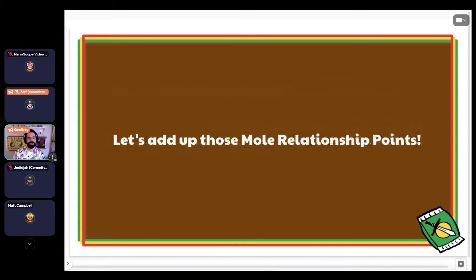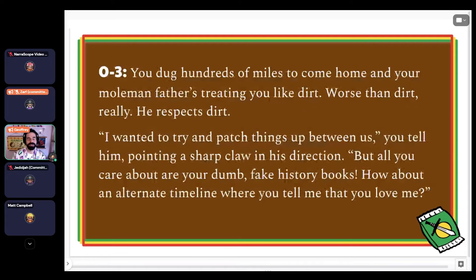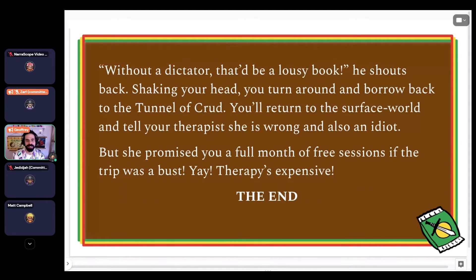Adding them up, you scored a two total. 'You dug hundreds of miles to come home, and your mole man father's treating you like dirt. Worse than dirt, really — he respects dirt.' 'I wanted to try and patch things up between us,' you tell him. 'But all you care about are your dumb fake history books. How about an alternate timeline where you tell me that you love me?' 'Without a dictator, that'd be a lousy book,' he shouts back. You turn around and burrow back into the tunnel. You'll return to the surface world and tell your therapist she is wrong and also an idiot — but she promised you a full month of free sessions if the trip was a bust. Yay, therapy's expensive. The end.